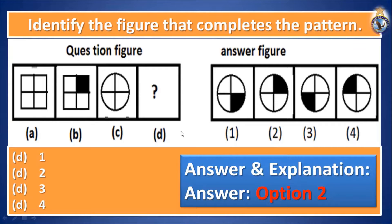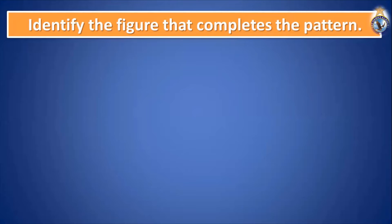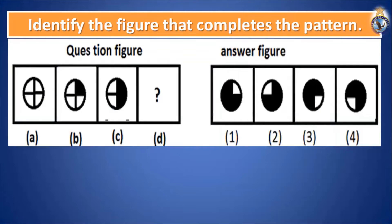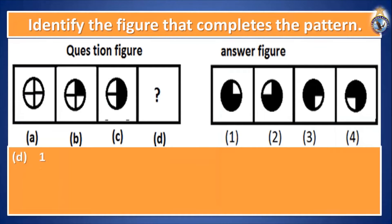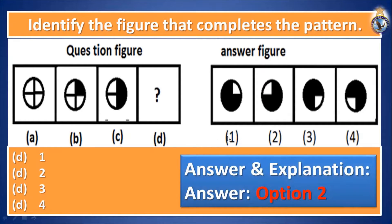Your answer was right. Let's move towards the next question. Identify the figure that completes the pattern. Let's see A, B, C, and D — you have to answer the D one. Options are one, two, three, and four. Your choice was four. Let's see the answer — option number two. Let me explain: it's the same as question number one — coloring is increased in the clockwise direction. First one is covered, then clockwise the second one, and in the third figure the third one should be covered.